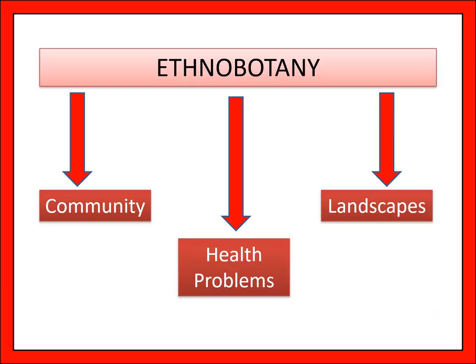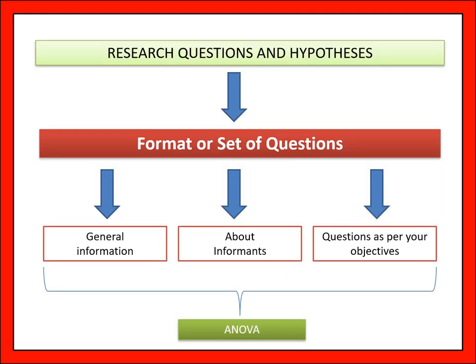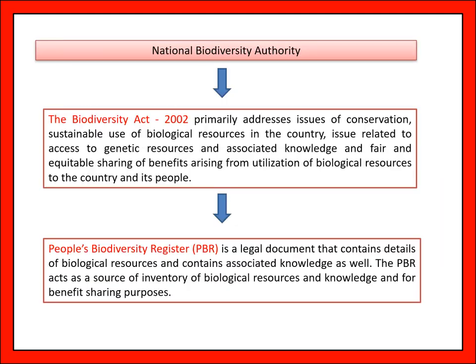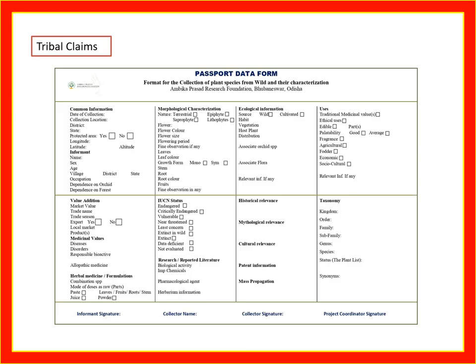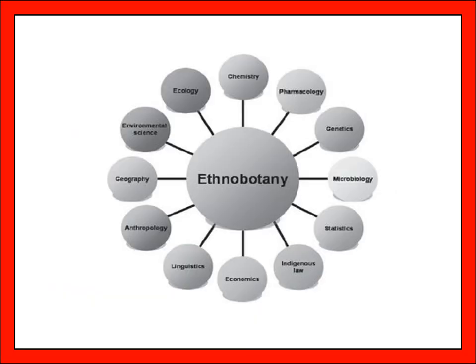Ethnobotany means the community has a problem with the landscape. We have discussed Code of Ethics, National Biodiversity Authority, and Tribal Claims. These are the informants — it should be more than 35 years old. Ethnobotany intersects with ecology, pharmacology, genetics, microbiology, statistics, indigenous law, economics, literature, anthropology, and geography — all are interrelated to ethnobotany.